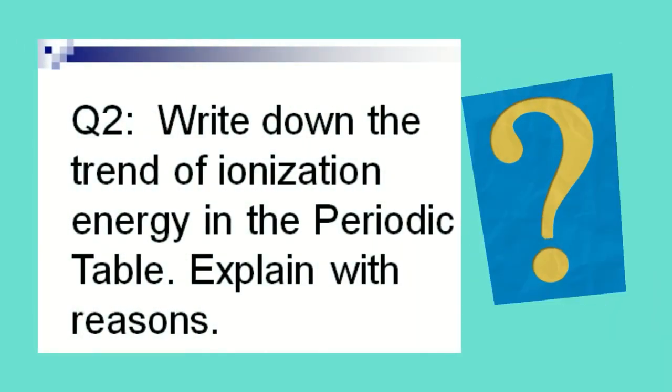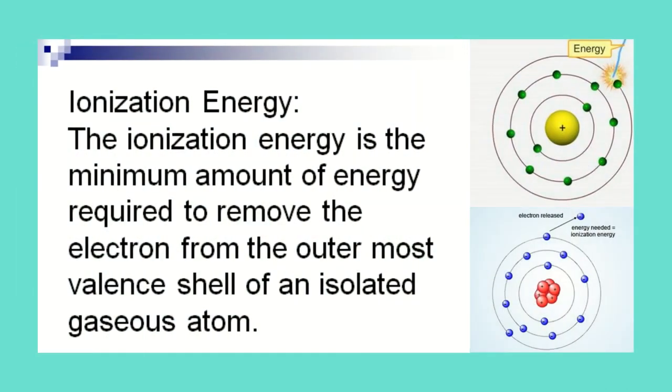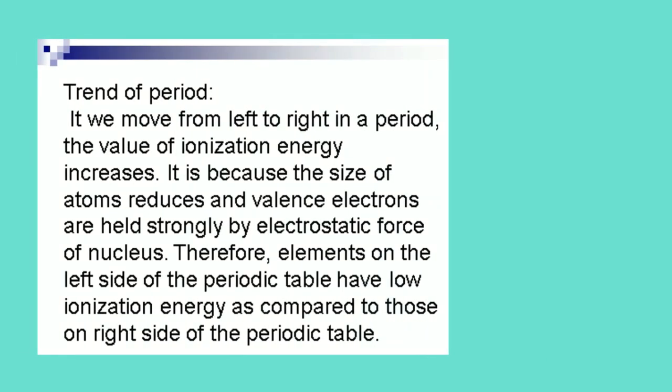Write down the trend of ionization energy in the periodic table. Explain with reasons. The ionization energy is the minimum amount of energy required to remove the electron from the outermost valence shell of an isolated gaseous atom.